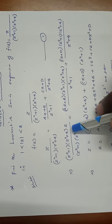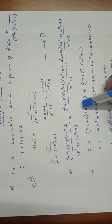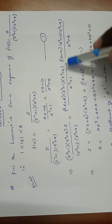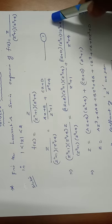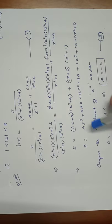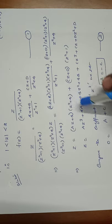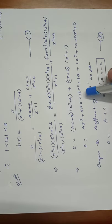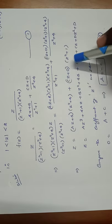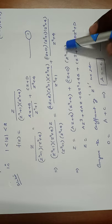Expanding the right-hand side: Az·z² = Az³, Az·4 = 4Az, B·z² = Bz², B·4 = 4B, Cz·z² = Cz³, Cz·1 = Cz, D·z² = Dz², D·1 = D. So z = Az³ + 4Az + Bz² + 4B + Cz³ + Cz + Dz² + D.